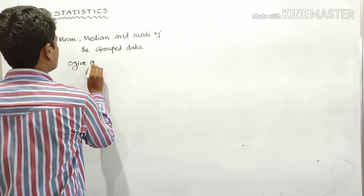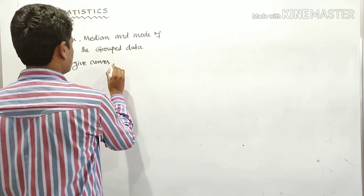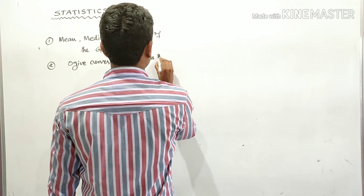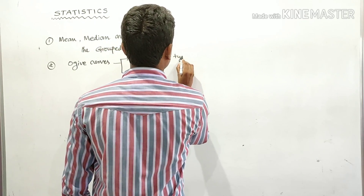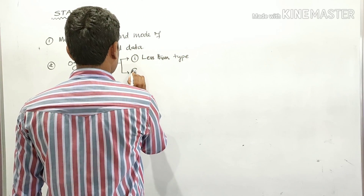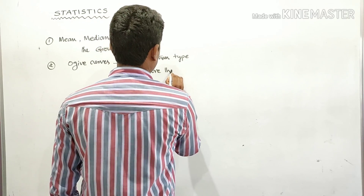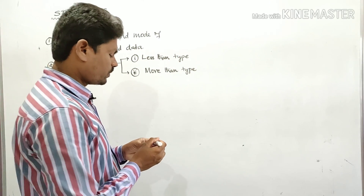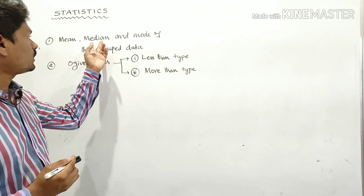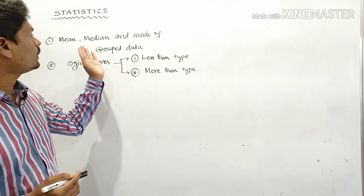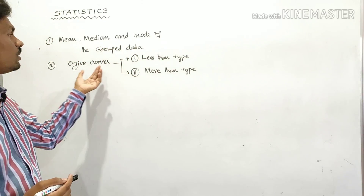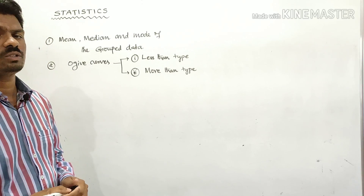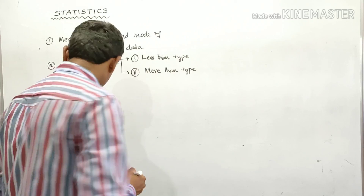We also have cumulative frequency curves, also called ogives. There are two types of ogives: the less-than type ogive and the more-than type ogive. To find the mean we have three methods, but to find the median and mode we have only one method each. We can also obtain the median from the ogive.